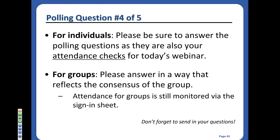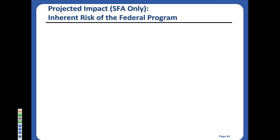At the beginning, we talked about type A programs and significant deficiencies no longer being an automatic high-risk trigger. Now let's go into the inherent risk of federal programs. It used to be that an auditor could, at their own discretion, consider the inherent risk of the federal program and deem a type A program high risk and bring it in for testing. Looking at the Student Financial Assistance Program: 29 states report it on their statewide CIFA. Of those, 22 of the 29 states audited Student Financial Assistance annually — every year on their data collection form, they are indicating they are auditing it every year as a major program.